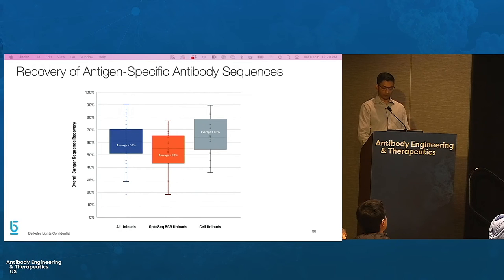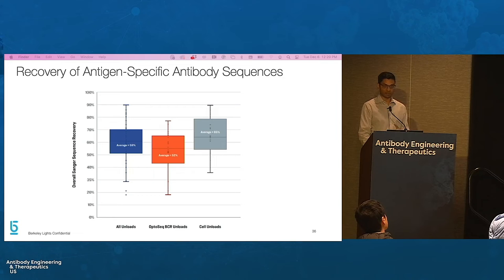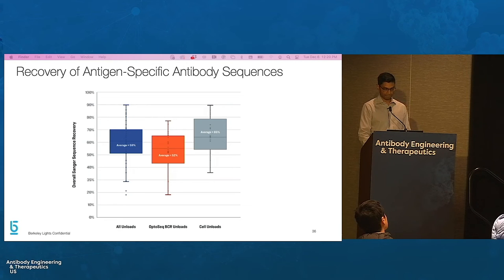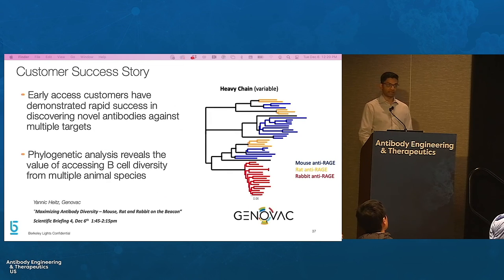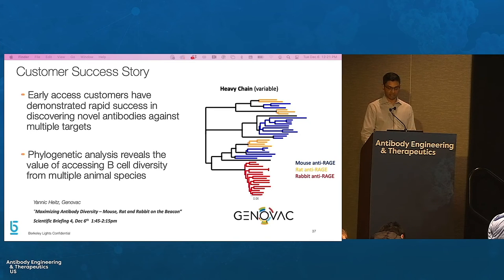The Opto-Memory B discovery rabbit workflow enables efficient recovery of antigen-specific antibody sequences for downstream expression and confirmation assays. The overall sequence recovery from both cell and OptiSeq-BCR unload methods was about 60%, and nearly 90% of re-expressed antibodies yielded the expected antigen specificity. Early customer testing has yielded rapid discovery of antibodies against therapeutically relevant targets. The data from the Genovac team demonstrates how the Opto-Memory B rabbit workflow significantly expands access to antigen-specific antibody diversity. I encourage you to attend Yannick's talk later this afternoon to learn more about this work.